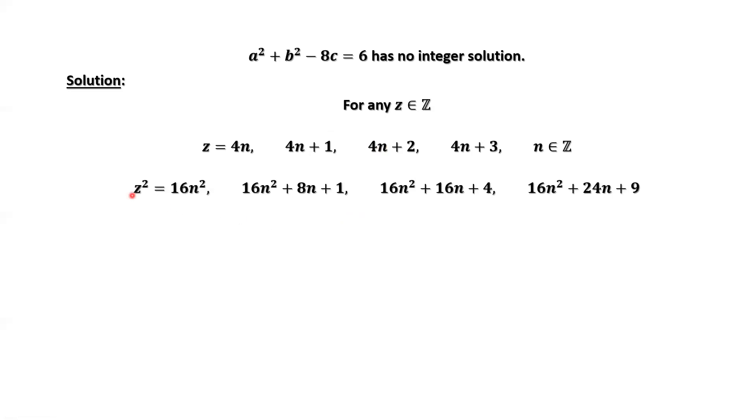Consider z squared. What are we doing? Because here we have a squared and b squared, and both a and b are integers. If we square the first number, that's 16n squared. Then the second number squared, and so on. This implies z squared divided by 8 has only 3 possible remainders. Let's check one by one. 16n squared divided by 8, the remainder is 0. For 16n squared plus 8n plus 1, the remainder is 1. Then remainder is 4. Then remainder 9 divided by 8, the remainder is 1. So we only have 3 possible remainders.